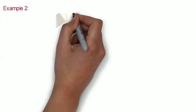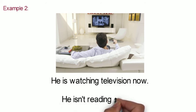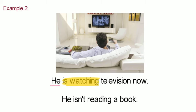Example 2: He is watching television now. He isn't reading a book. The subject of the first sentence is he, and the verb is is watching. The subject of the second sentence is he, and the verb is isn't reading. Remember, he, she, and it use is or isn't as a helping verb.